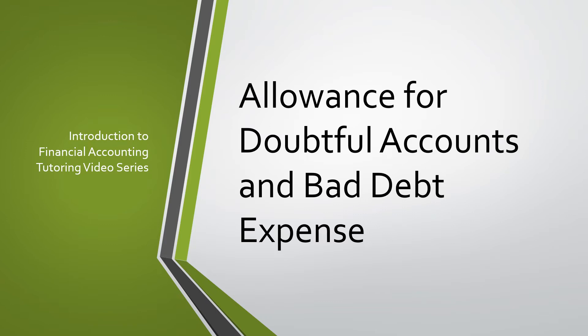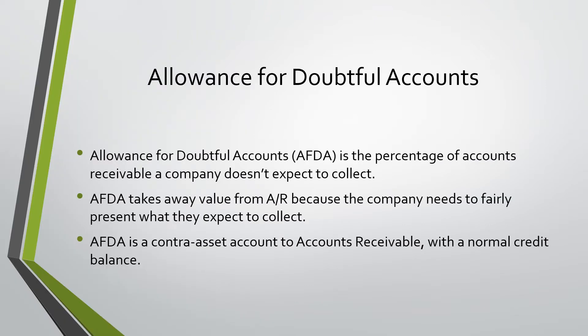Today we will be going over Allowance for Doubtful Accounts and Bad Debt Expense. Allowance for Doubtful Accounts is the percentage of accounts receivable a company doesn't expect to collect. This account takes away from the value of AR because the company needs to fairly present what they expect to collect. This is a contra-asset account to accounts receivable and has a normal credit balance.